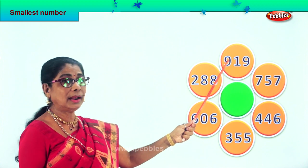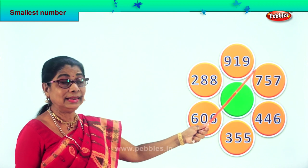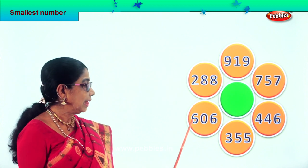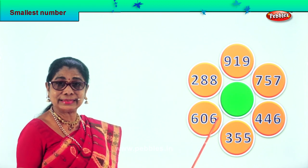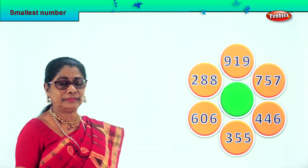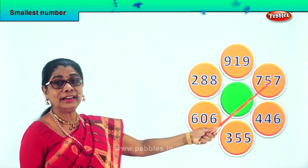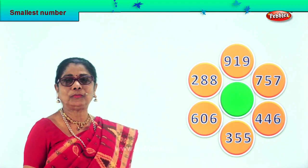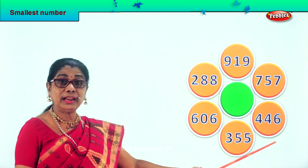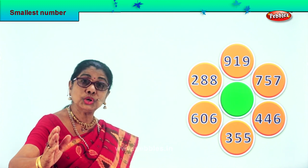Here we have nine hundred nineteen, nine hundred nineteen, two hundred eighty-eight, six hundred six, three hundred fifty-five, four hundred forty-six, and seven hundred fifty-seven. Let's look at all the hundreds. Nine hundred, two hundred, six hundred, three hundred, four hundred, and seven hundred. In the hundred place, which is the smallest? Two hundred.